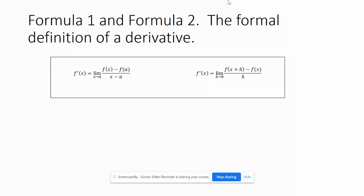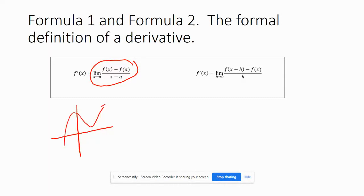I want to talk about what this notation means. In the previous video we started talking about this calculation: the limit as x approaches a of f of x minus f of a over x minus a. So what that's doing is — if you have some random curve, say a cubic polynomial, and we call this point a, f of a — I want to figure out the tangent at this point.